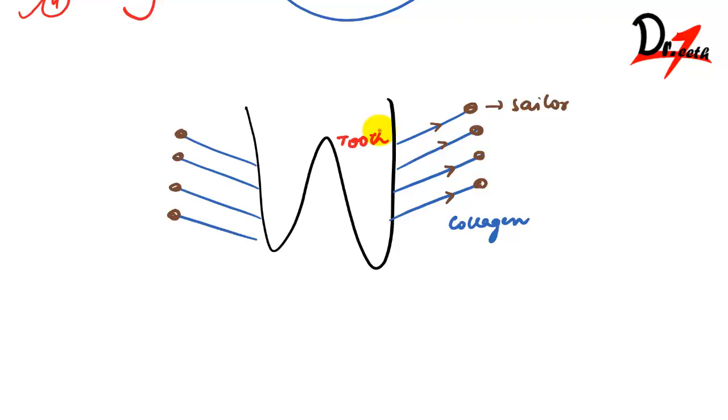Thus according to this theory, eruption of teeth could be brought about by combination of events involving a force initiated by this fibroblast. This force is transmitted to the extracellular compartment via the fibro nexus that was created, and to the collagen fiber bundles which are aligned in a proper or appropriate inclination, and this brings about tooth movement.